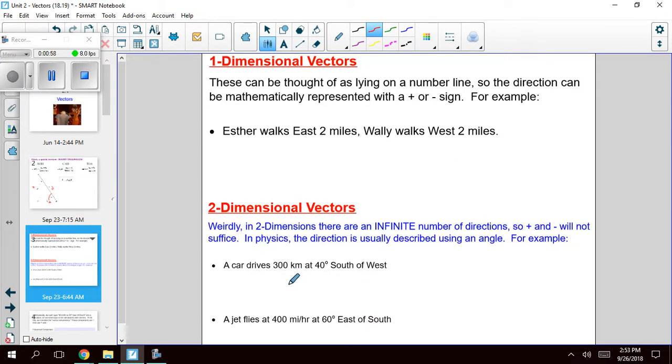Alright, moving on. So we've already done one dimensional vectors and we've had people walking 2 miles east and then they went 2 miles west and if we were to add those together, the negative and positive would cancel out. So 2 miles plus a negative 2 miles, we get 0 miles as a resultant.